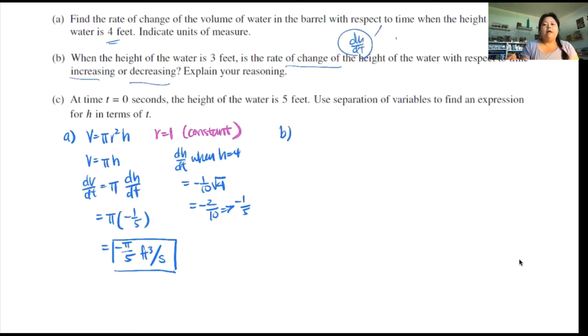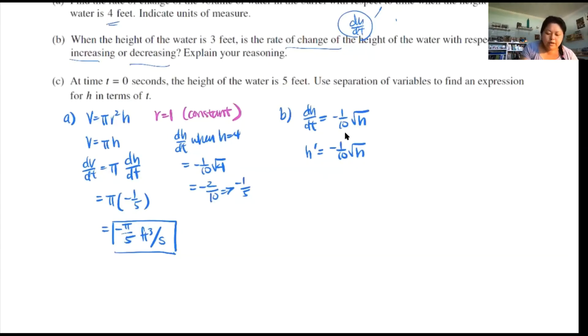Your dh/dt is defined as negative 1 over 10 root h. In other words, this is h prime equals negative 1 over 10 root h. What's h double prime? Because we're looking at the rate at which this rate is changing, we gotta look at double prime. We're looking at h double prime. Take your constant negative 1/10, now take the derivative of h. You get one half times h to the negative one half. And don't forget h itself has an h prime because this is implicit differentiation in a sense.